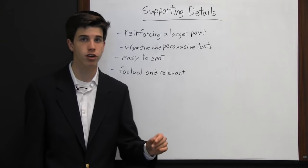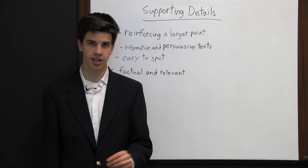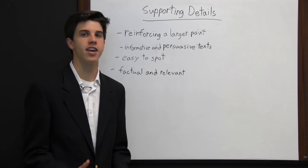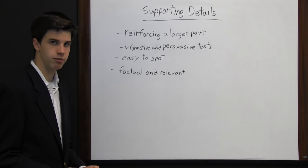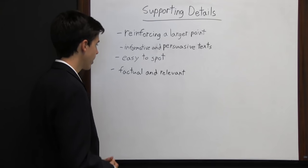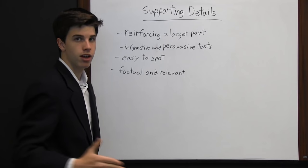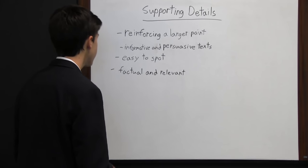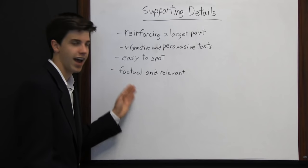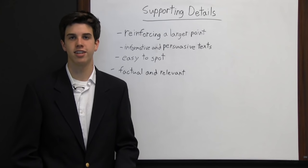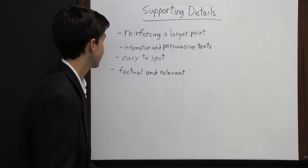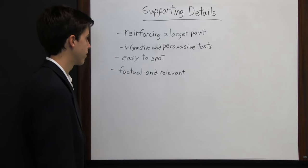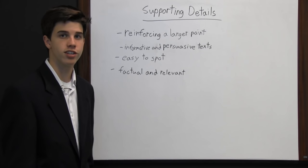Supporting details are often easy to spot because the writer will let you know they're coming. A lot of times they'll make a main point and then say "first" and give a supporting detail, "second" and give another, and "finally" and give a third. Or they might say "for example" or "for instance" — that tips you off that the next supporting detail is coming. Supporting details need to be both factual and relevant. If a detail is accurate but not relevant to the main idea, it's no good. And if it's relevant but not accurate, it's also no good.